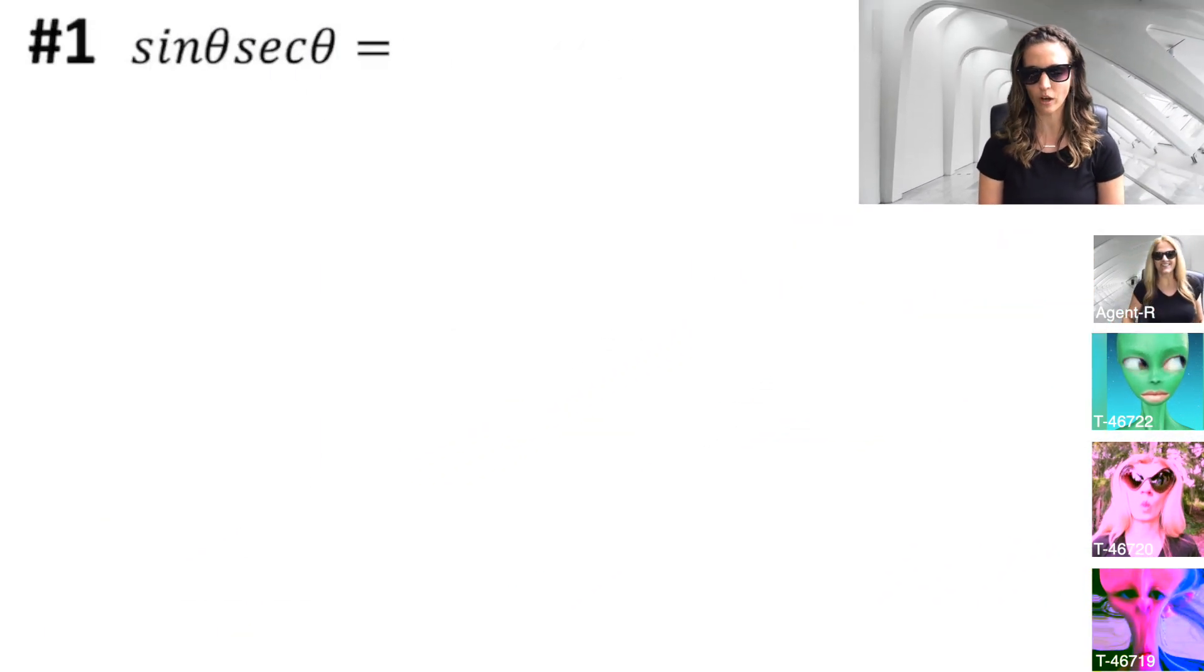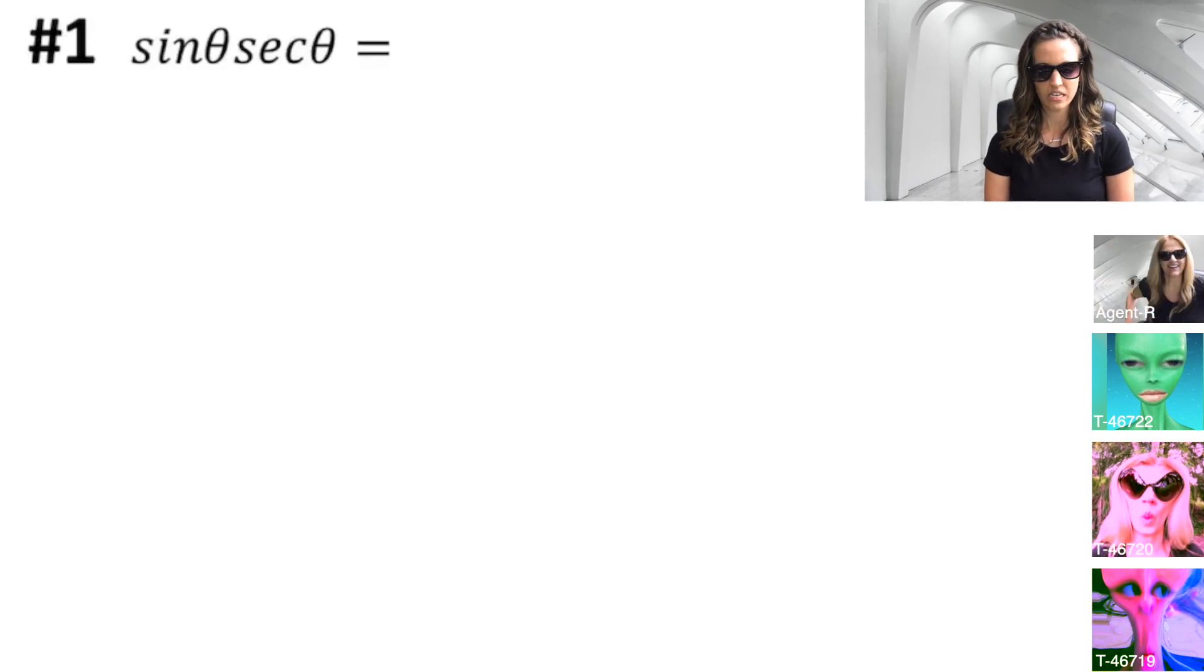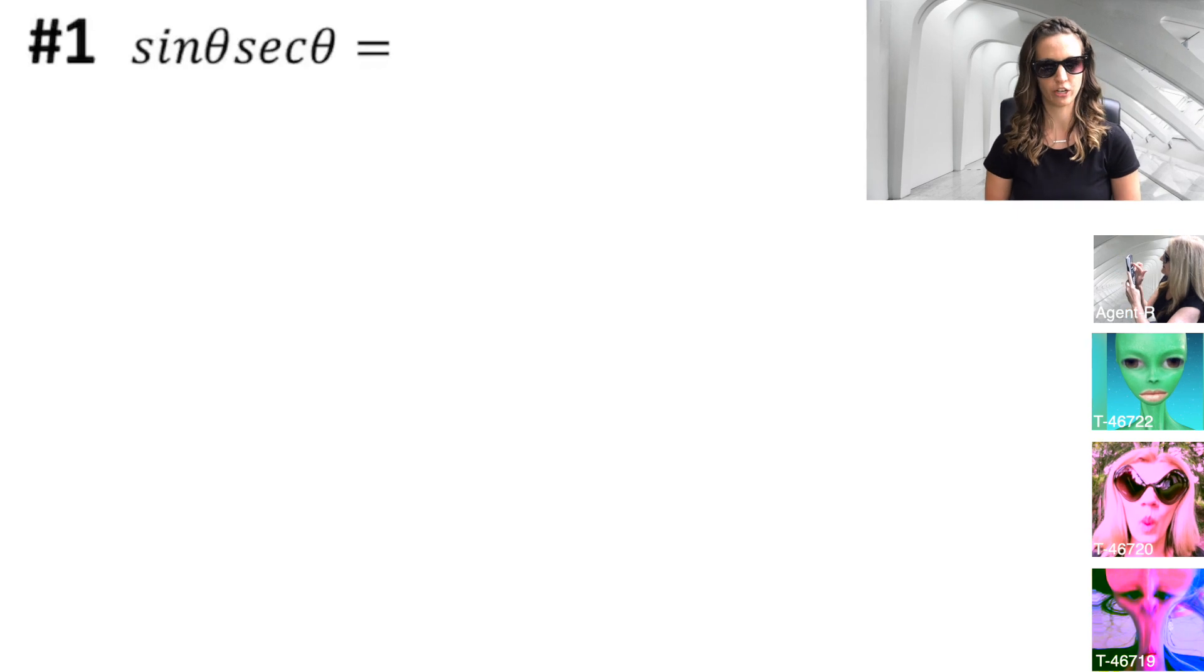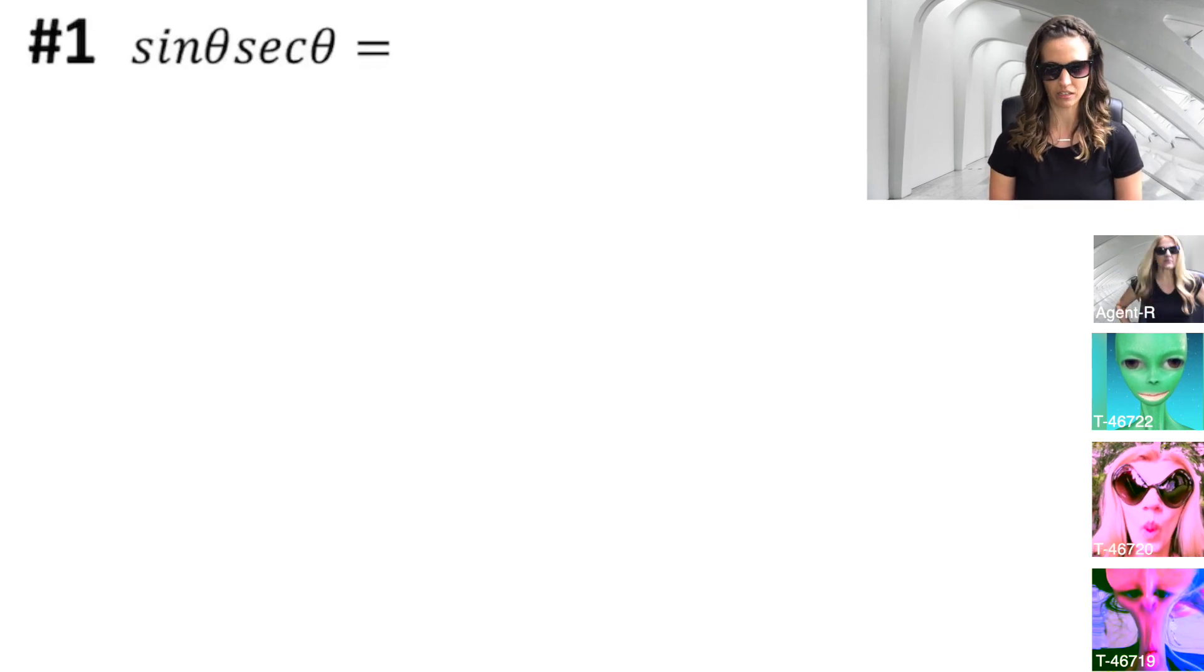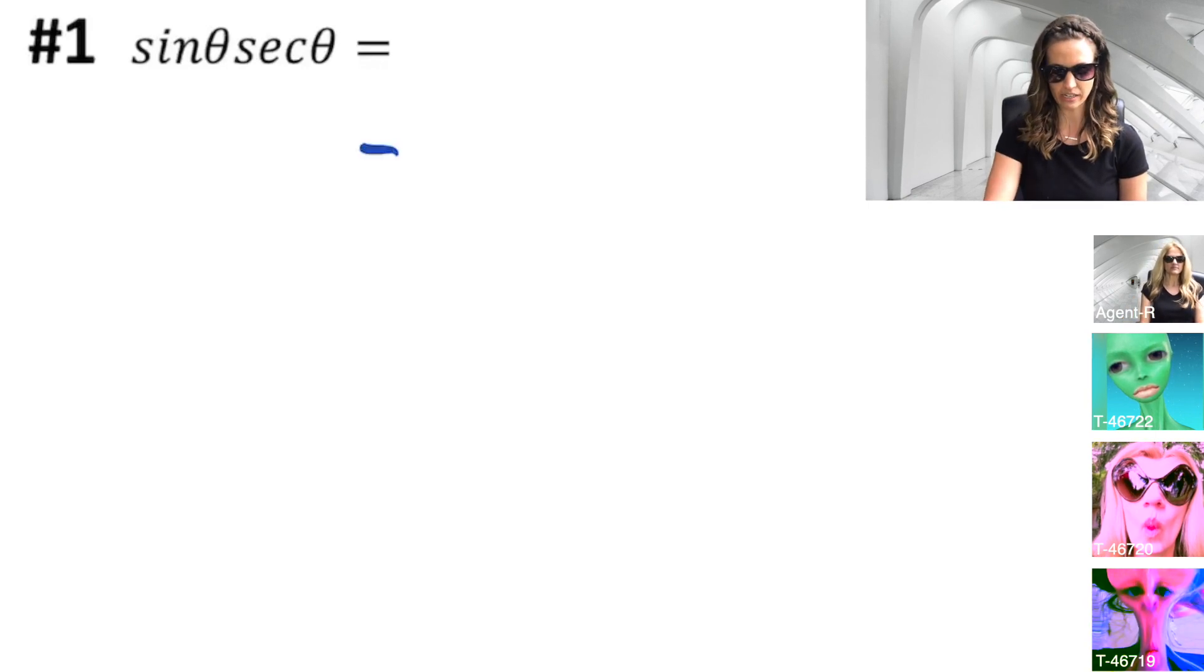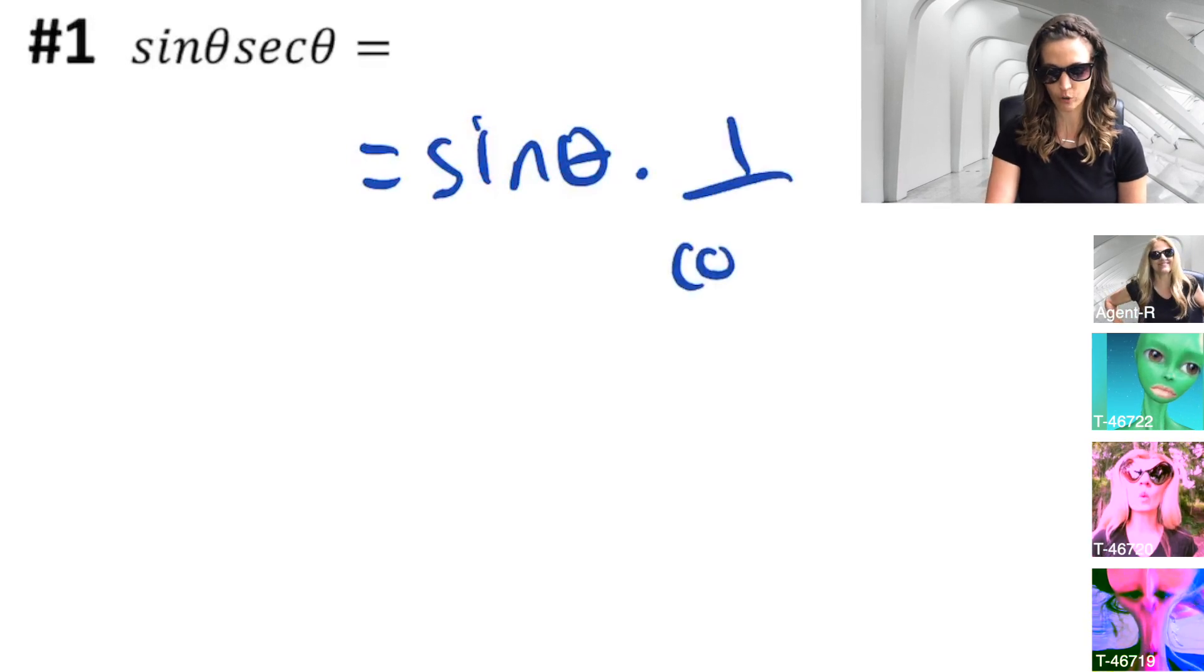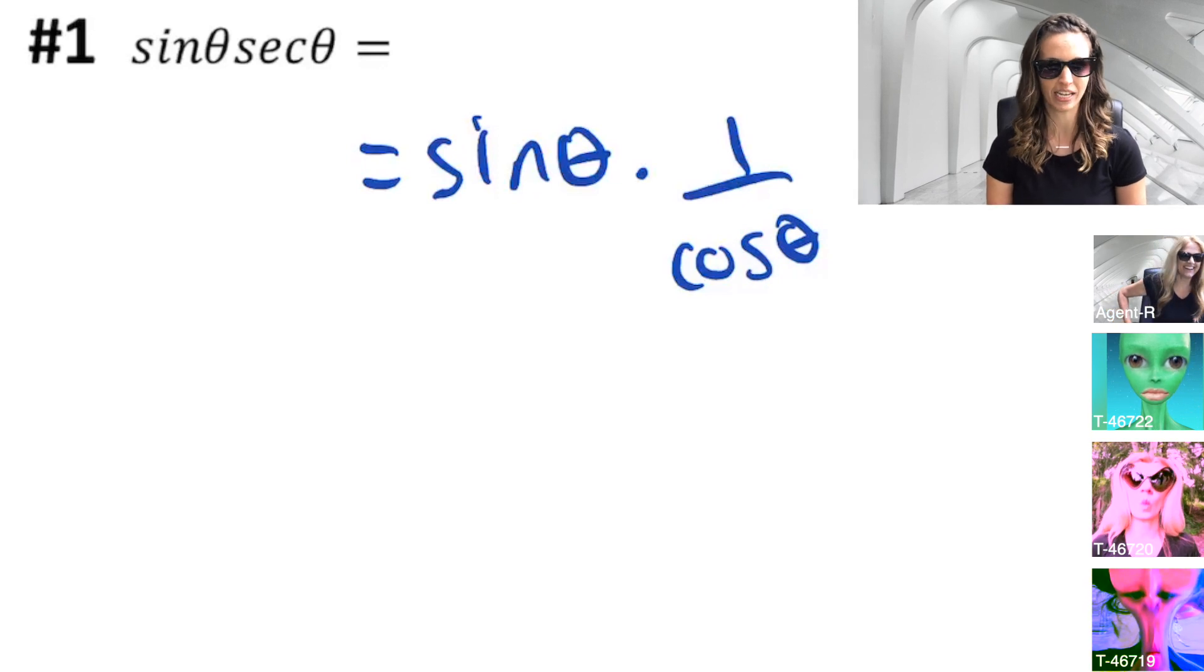Thank you, Agent R. So we need to simplify the trigonometric expression. Number one, we have sine theta, secant theta. We want to figure out what this is disguised as. We'd want to use our trig identities from our manual to discover what this says. A good strategy for figuring out what this is, is to rewrite the expression in terms of sine and cosine. Sine theta is sine theta, but secant theta is one over cosine theta. That is a trig identity in disguise.